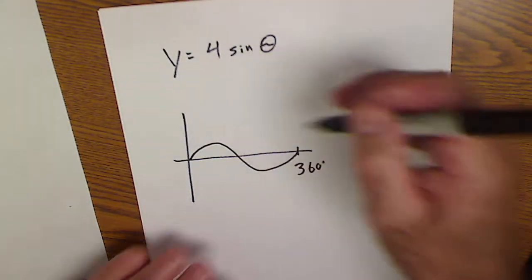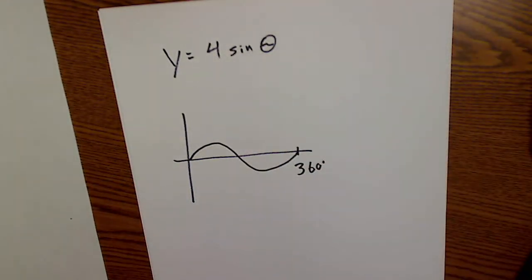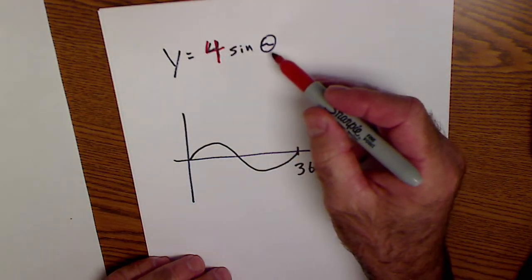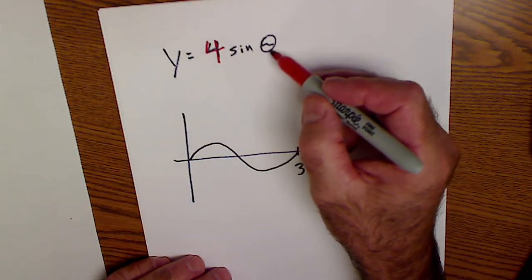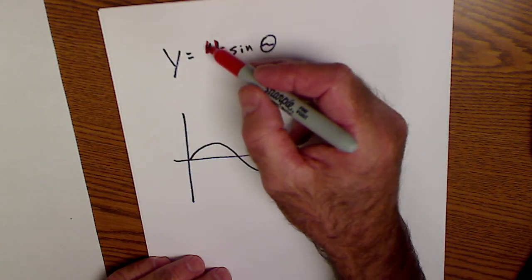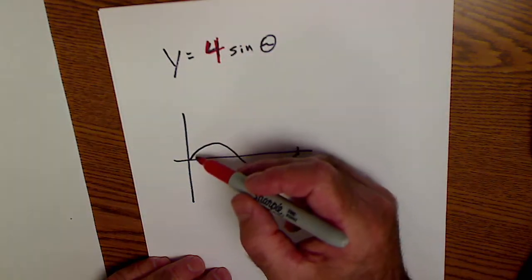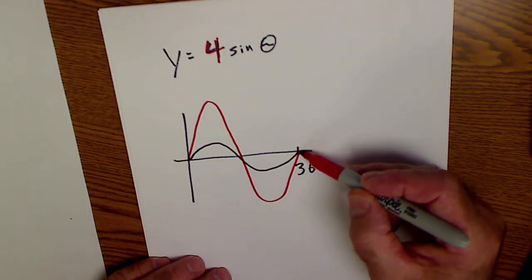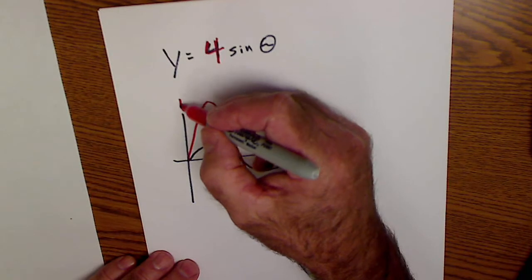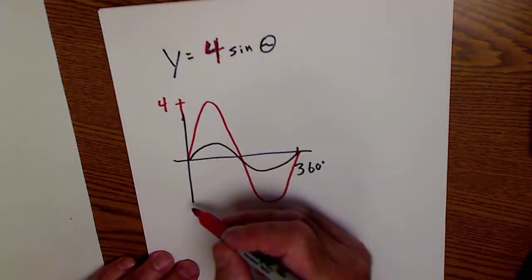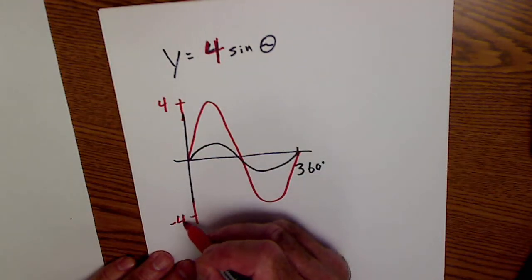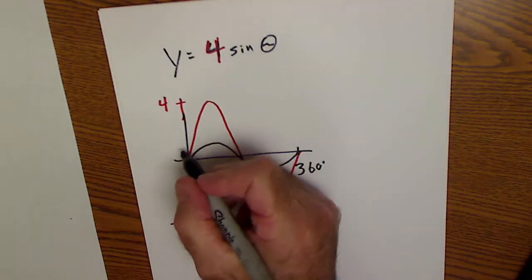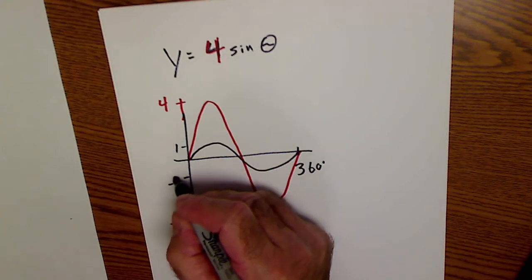And what that 4 does, that 4 bumps that sine graph up 4 units. So any value of theta, you would take the sine of that value, then multiply it by 4. So 4 sine of theta takes the amplitude and pushes it up 4 units and down to negative 4. So the amplitude now would be 4 and negative 4 versus before it was at 1 and negative 1.